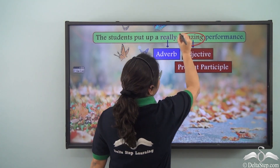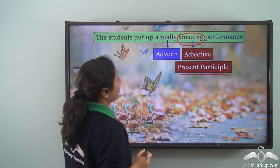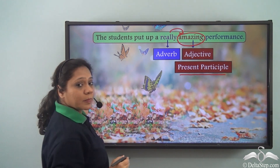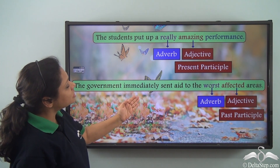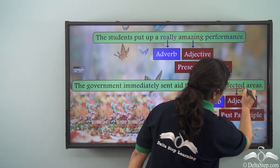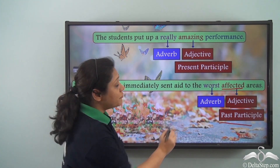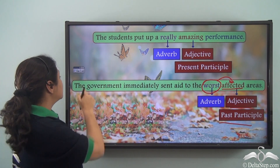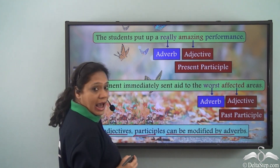'The students put up a really amazing performance.' Here 'amazing' is the -ing form of the verb used as an adjective — it is the present participle — and 'really' is the adverb modifying this adjective. Similarly, in 'The government immediately sent aid to the worst affected areas,' 'affected' is the past participle used as an adjective and 'worst' is the adverb modifying it. So we can say that like adjectives, participles can be modified by adverbs.